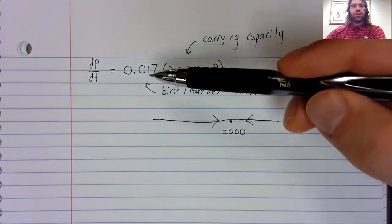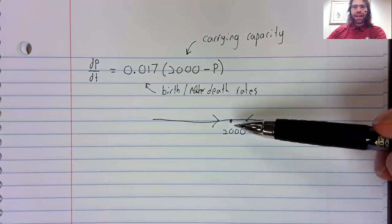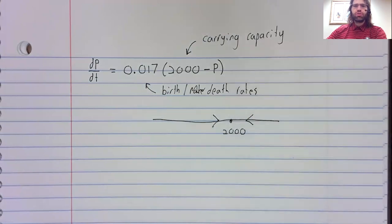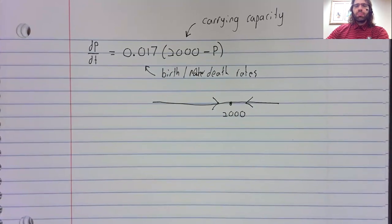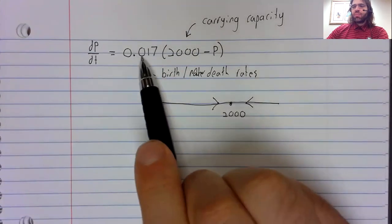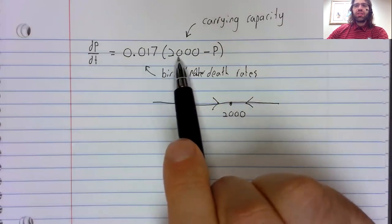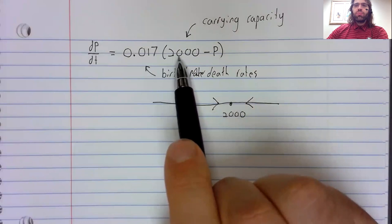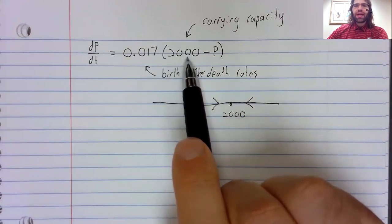And this 0.17 controls how fast we approach the carrying capacity. But the thing is that this number and this number are just estimations. We don't know, presumably, the exact carrying capacity.